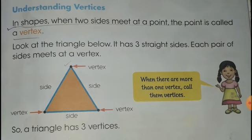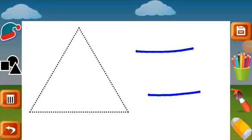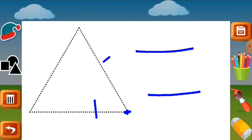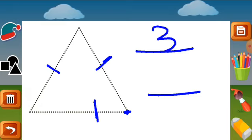Let's check the vertices and sides of each shape. The point where two sides meet is called a vertex. How many sides does a triangle have? One, two, and three. Three sides.